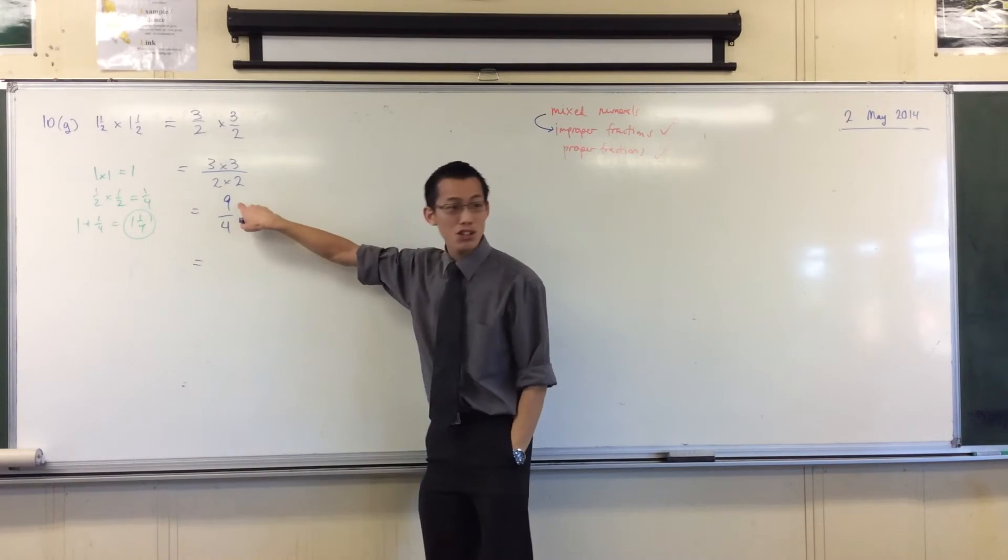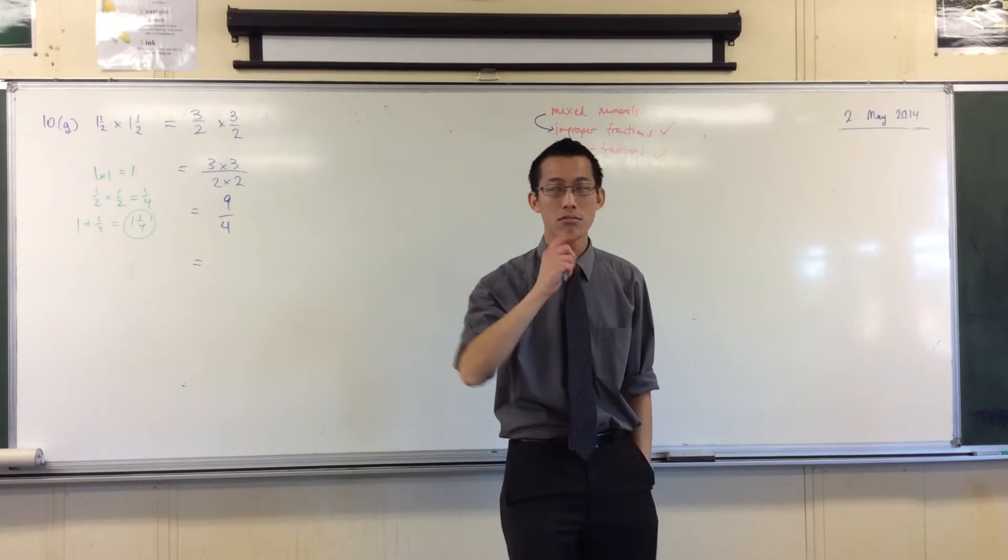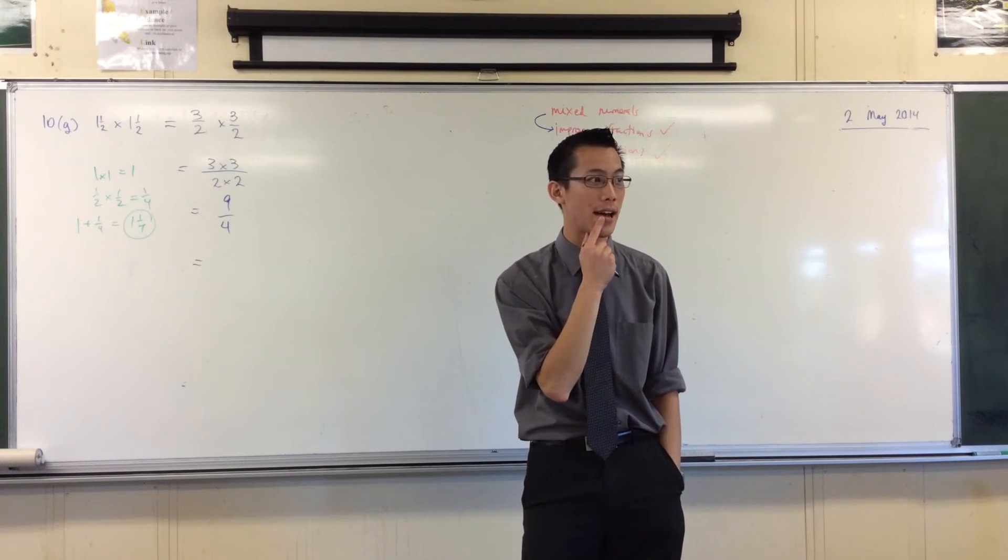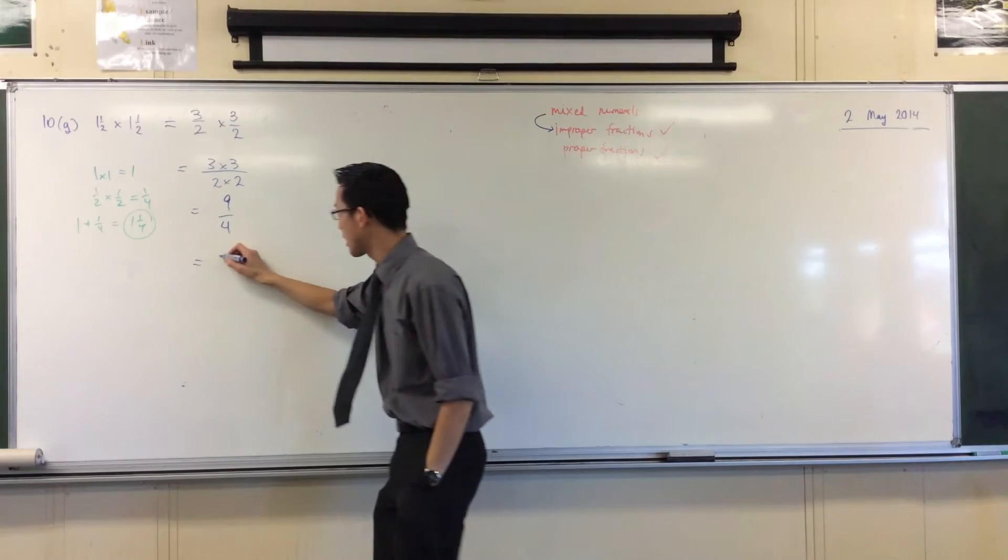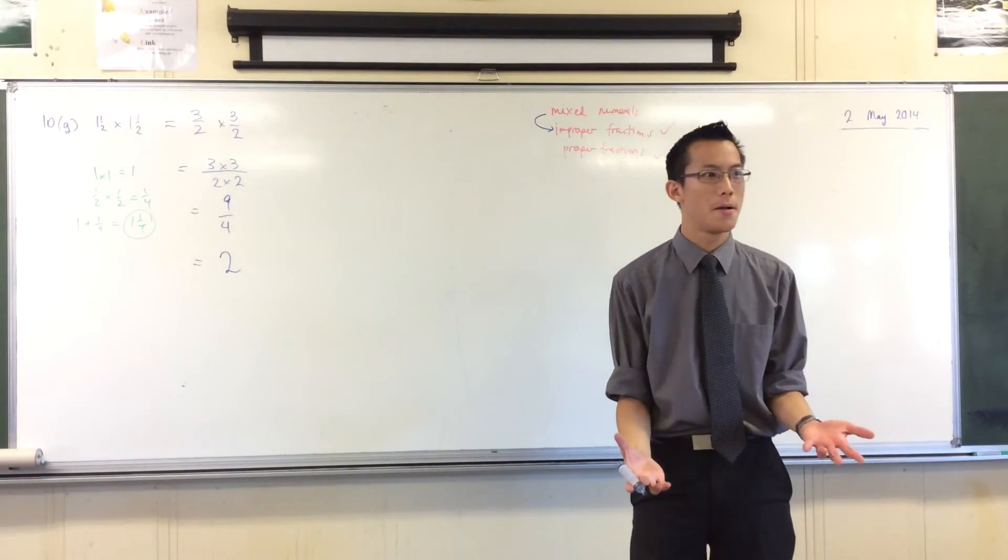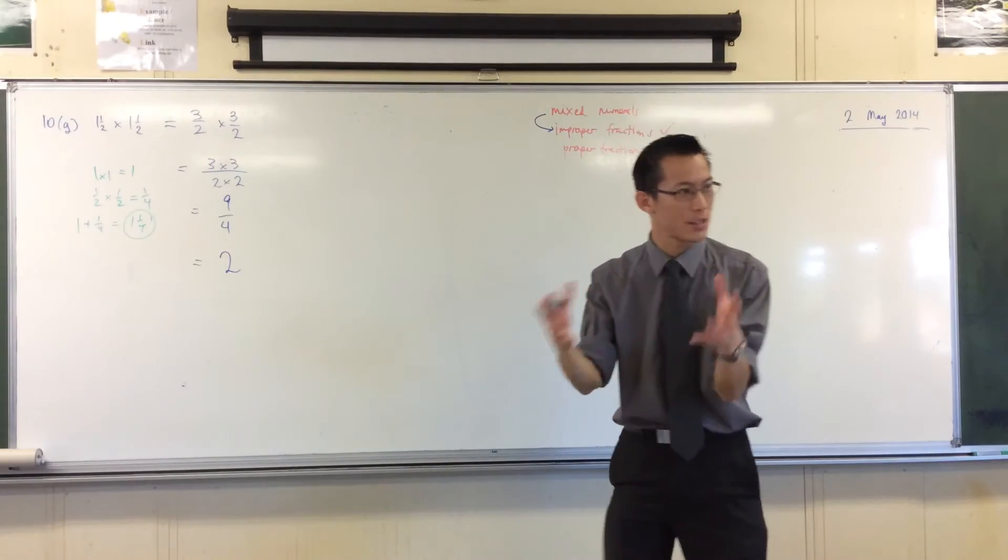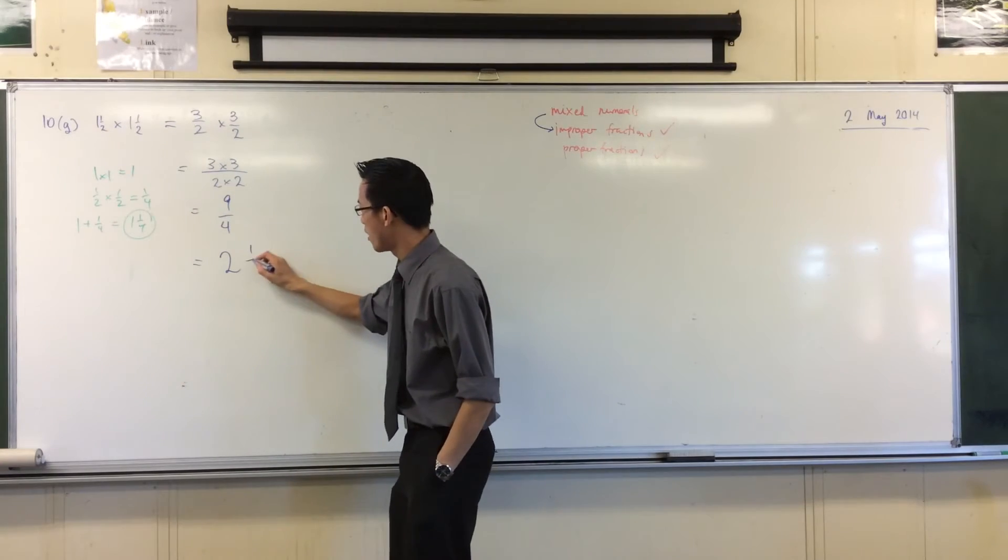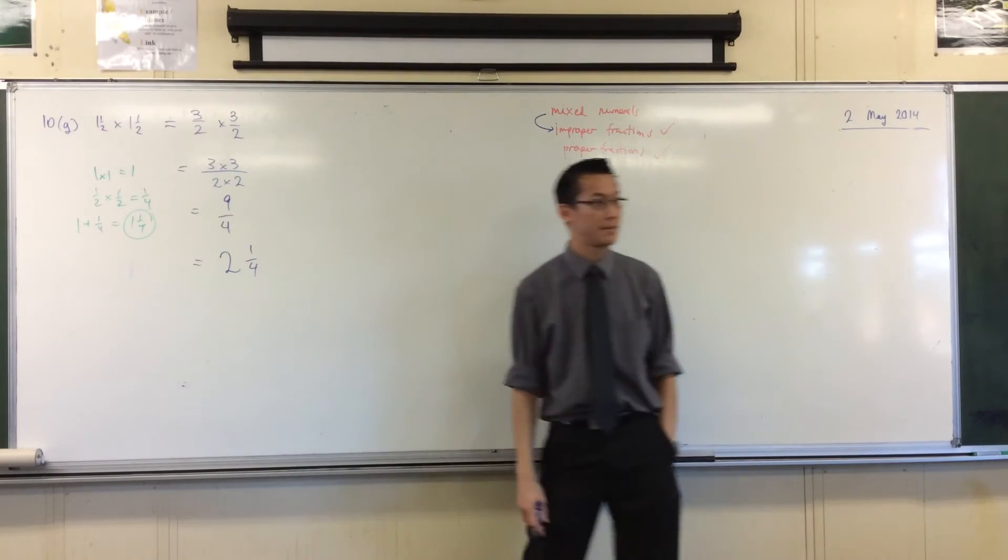Yeah, do you want to have a go, Chester? Good. You can do 9 divided by 4, right? You get, hmm, how many 4s fit into 9? 2. So I'm going to get a 2 out the front, okay? But there's a remainder, isn't there? What's left over? There's 1, because 2 times 4 is 8, right? So that remainder of 1 becomes the fraction there. There you go.